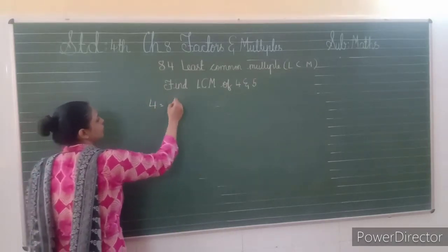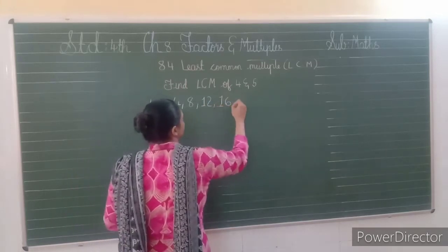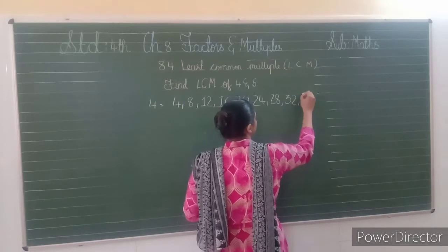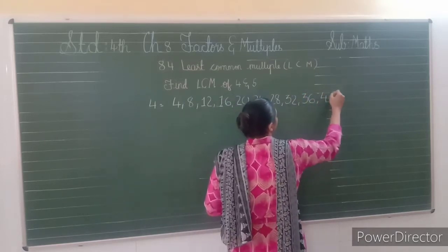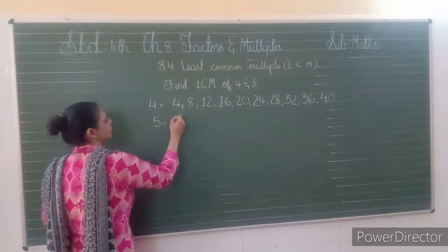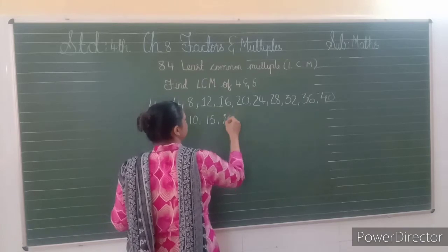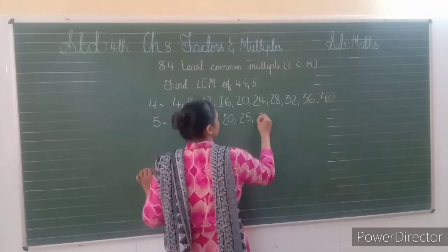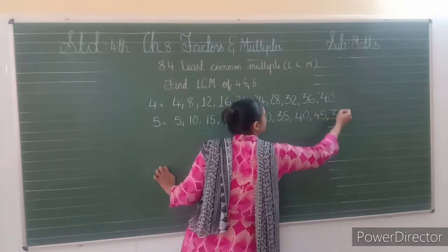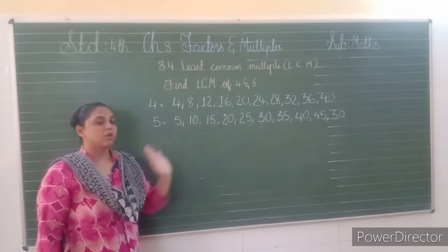Find out the multiples of 4: 4, 8, 12, 16, 20, 24, 28, 32, 36, and 40. We can go on after 40, but I am writing multiples only till 40. Now find out the multiples of 5: 5, 10, 15, 20, 25, 30, 35, 40, 45, and 50. These all are the multiples of 5.